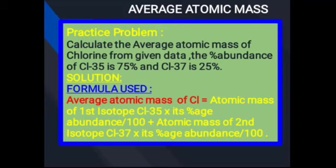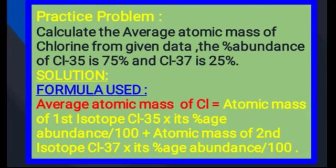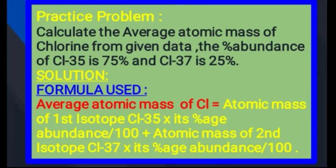Practice problem: Calculate the average atomic mass of chlorine from the given data. The percent abundance of chlorine-35 is 75% and chlorine-37 is 25%۔ یہ دو isotopes ہیں — دونوں chlorine کے۔ Chlorine-35 اور chlorine-37 میں 35 اور 37 atomic weights ہیں — دونوں chlorine elements سے belong کرتے ہیں لیکن دونوں atoms میں neutrons کی تعداد مختلف ہے۔ Chlorine-35 nature میں 75% اور chlorine-37 25% پایا جاتا ہے۔